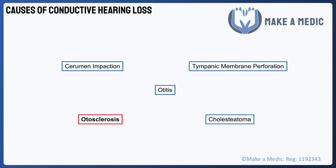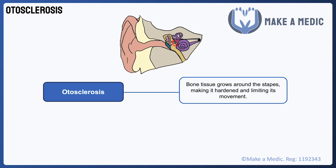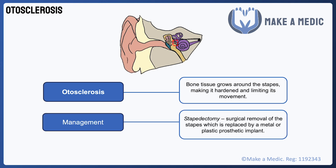Otosclerosis is a rarer condition, although it's thought to be the cause of Beethoven's hearing loss. This condition affects the conduction pathway at the level of the ossicles, because the disease involves the development of bone tissue around the stapes, or stirrup, which makes it hardened and unable to move properly. This stops the ossicles from amplifying and transmitting sound vibrations to the cochlea effectively. Diagnosis is based on the clinical picture of conductive hearing loss, but unlike the otitis conditions, there won't be any signs of infection and the tympanic membrane will appear normal. Nowadays, otosclerosis can be treated by surgically removing the stapes and replacing it with a metal or plastic prosthetic implant.